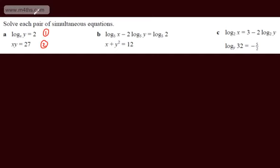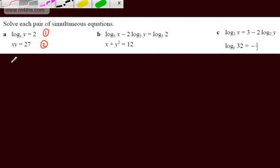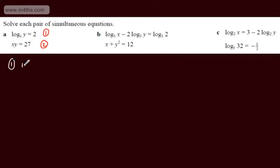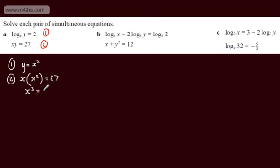I can rewrite equation 1 in exponential form. If log to the base x of y is equal to 2, we can say for equation 1, y is equal to x squared. I can now substitute this into equation 2. So I'll have x multiplied by y, which is x squared, equal to 27. So x cubed is 27, and taking the cube root of both sides, x will be equal to 3.